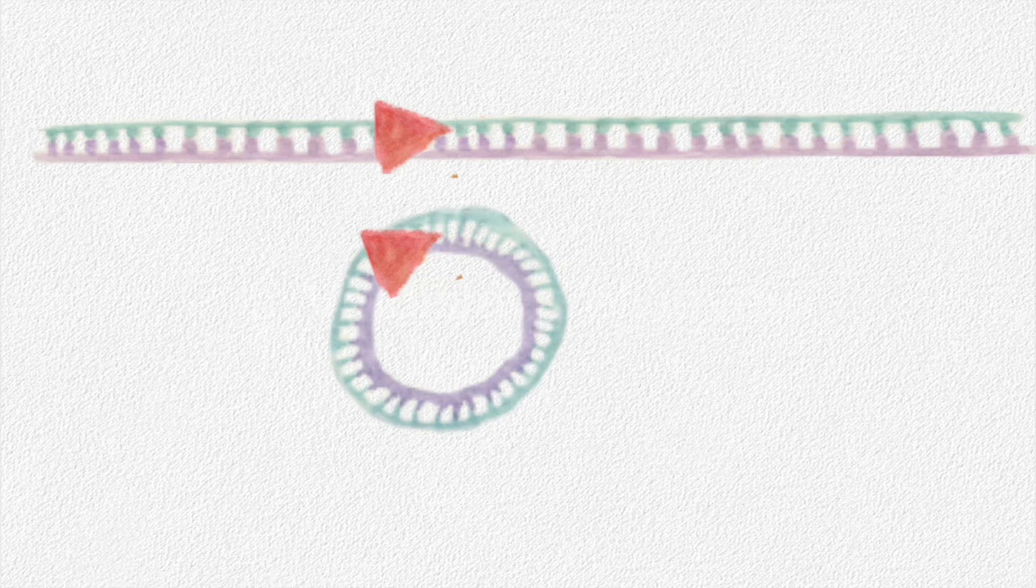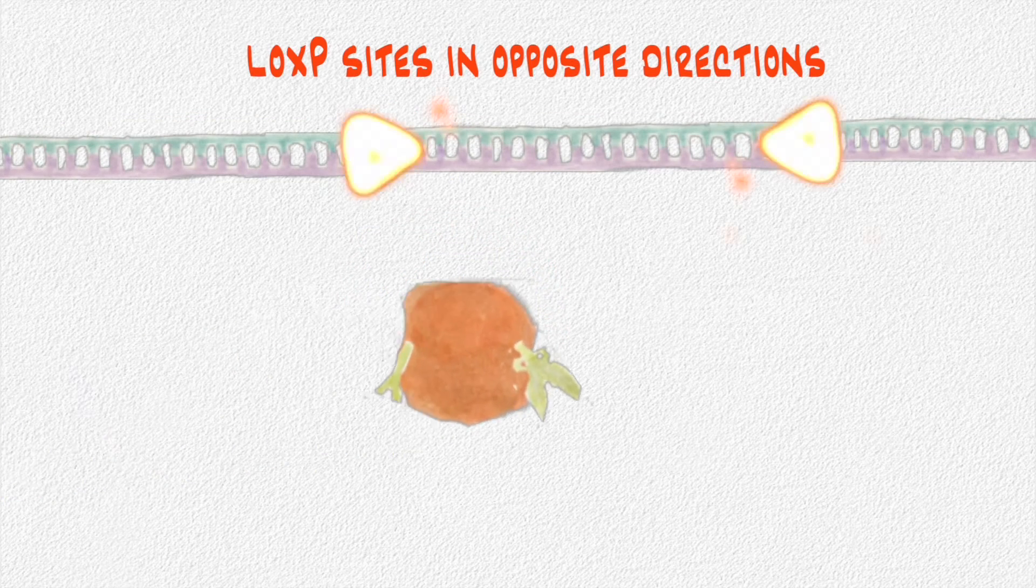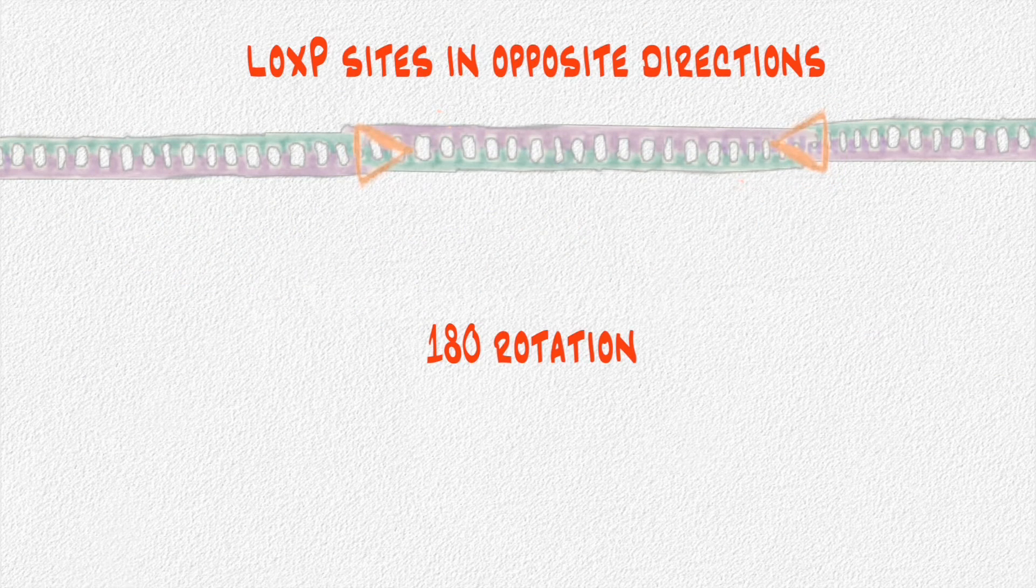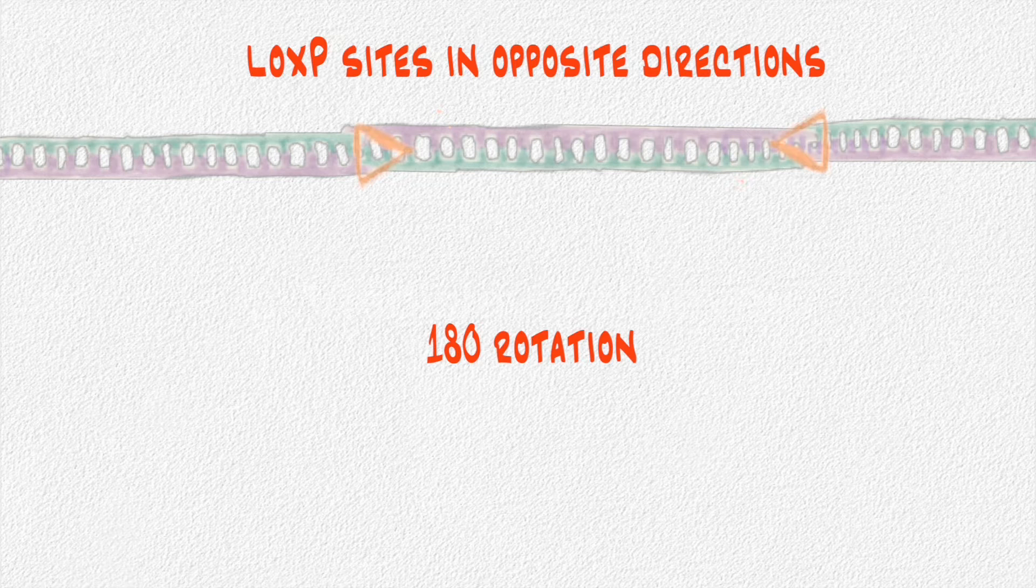Two LOXP sites not facing each other leads to the gene being taken out by Cre, or knocked out. Two LOXP sites facing each other leads to the gene being taken out, turned upside down, and put back in the sequence.